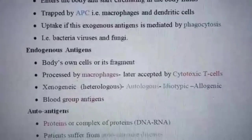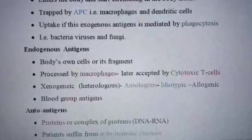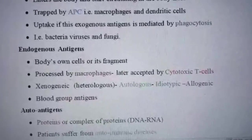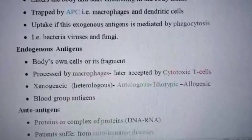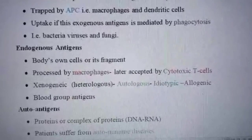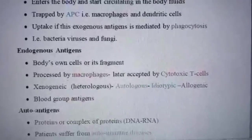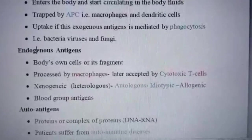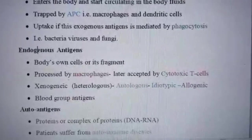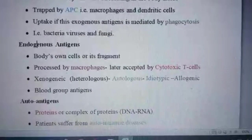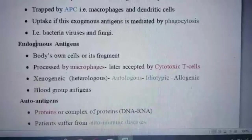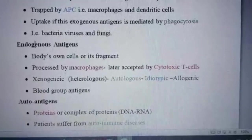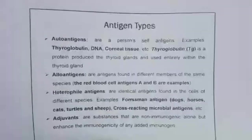The next type is endogenous antigens. They are the body's own cells or fragments of cells, processed by macrophages and later accepted by cytotoxic T cells. Endogenous antigens may be xenogenic, autologous, idiotypic, or allogenic.